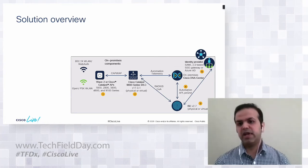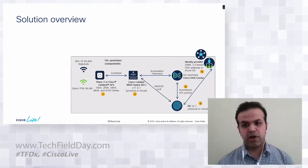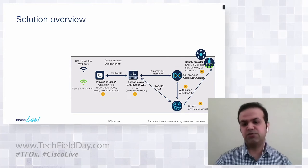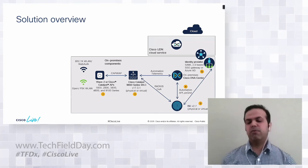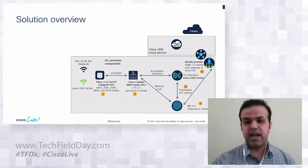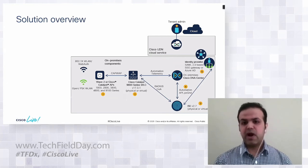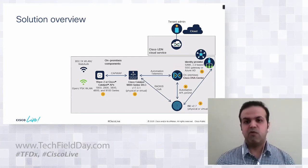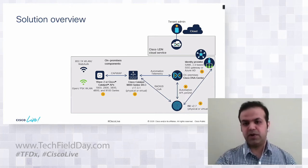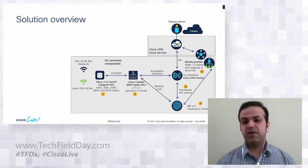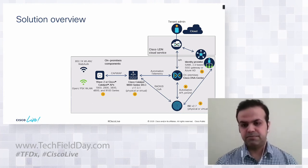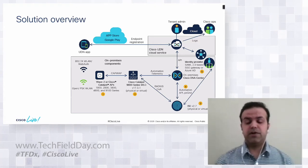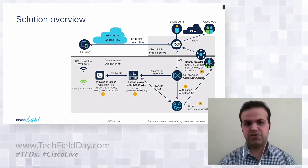There is also a cloud component called Cisco UDN Cloud Service that a tenant admin can use. The cloud service enables students or end users to register their devices from anywhere and anytime. The tenant admin can log on to the Cisco UDN Cloud Service and connect it to the on-prem DNA Center and to the identity provider. End users can use the UDN app — available on the App Store and Google Play Store — to register their endpoints in a very easy way.